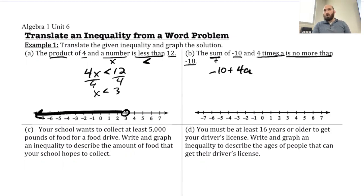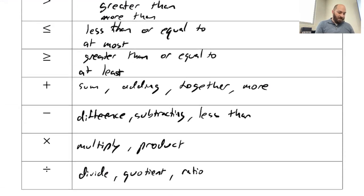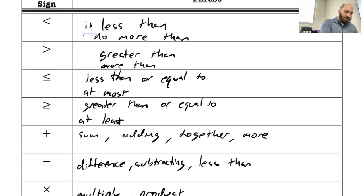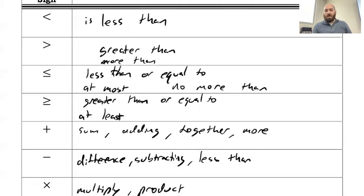So is no more than, so that means it could be less than. It could also be equal to. I think I did that in the wrong spot up here. No more than will actually come down here as less than or equal to. My bad, go ahead and fix that real quick.